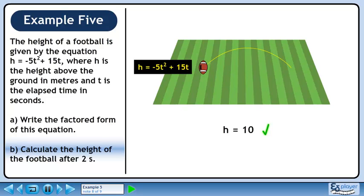Let's see what this means in the diagram. 2 seconds into the football's flight, it is 10 meters above the ground.